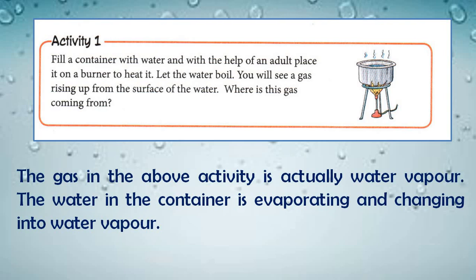Where is this gas coming from? Have you ever thought ki yeh gas kahaan se aayi? Actually, this is the process of evaporation. The gas in the above activity is actually water vapor. Is poori activity mein jo gas oopar aa rahi hai, wo actually mein water ki vapor hai. The water in the container is evaporating and changing into water vapor. Heat hone ki wajah se water ko garmi mili, aur is garmi ki wajah se wo water, water vapor mein convert ho gaya. This is evaporation.